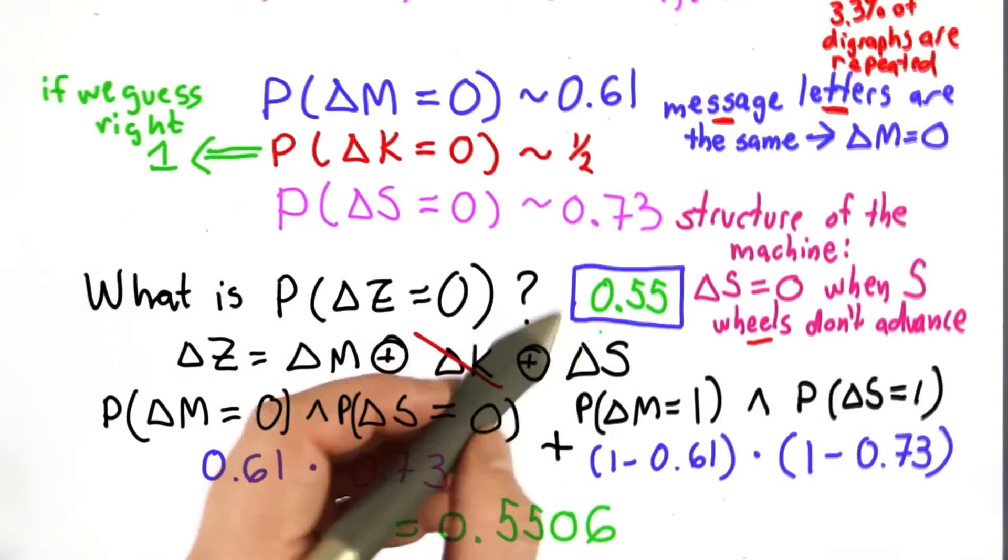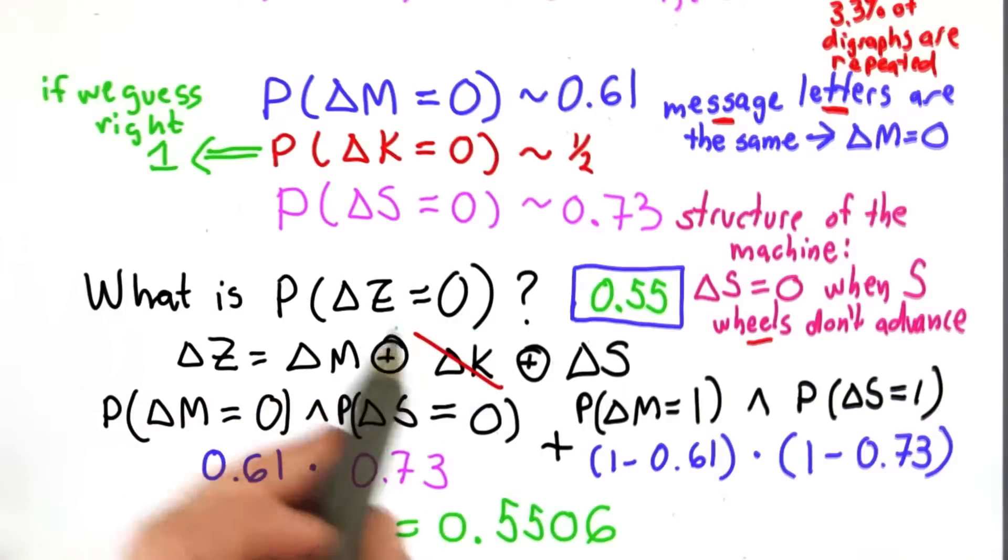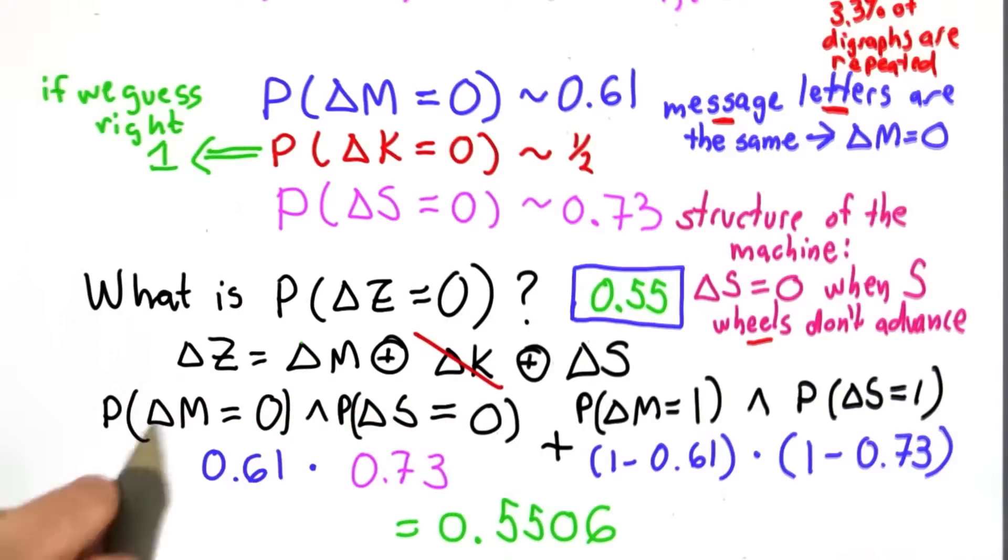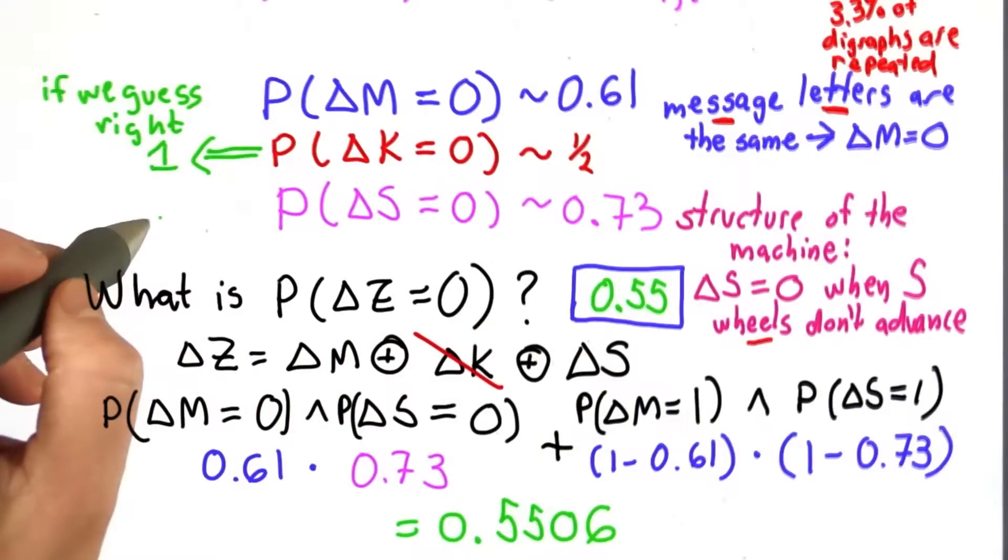So if we have enough text, we can count the number of positions where delta Z is equal to 0. If it's close to half of them, then it was the wrong guess. If it's close to 0.55 of them, then we have a good likelihood that that was the right guess.